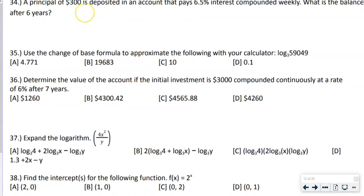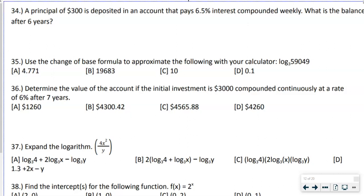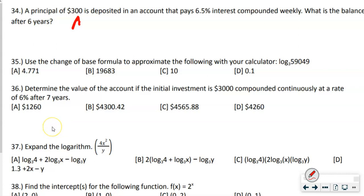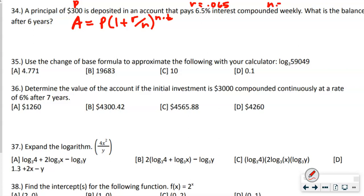Our formula here is A equals principal times one plus R divided by N, raised to the N times T power. So let's figure out our variables. P is $300, R is 0.065 — remember, move the decimal two places to the left. It's compounded weekly, so N equals 52. T is six years.